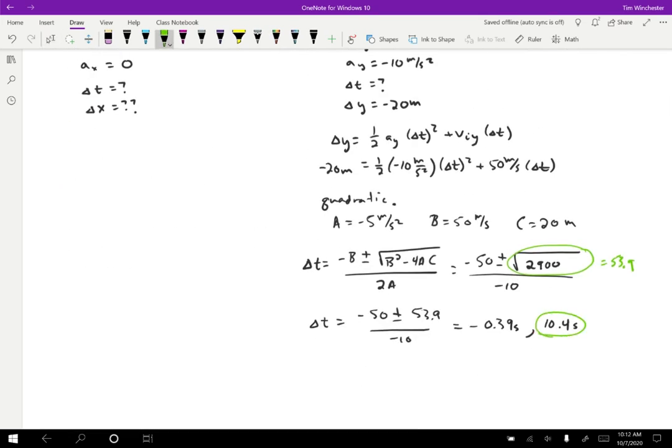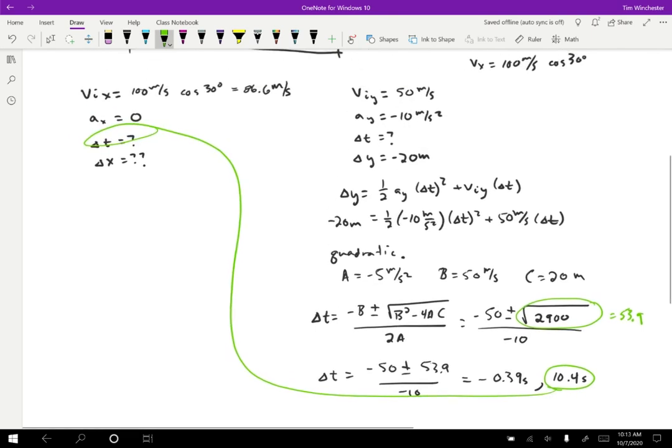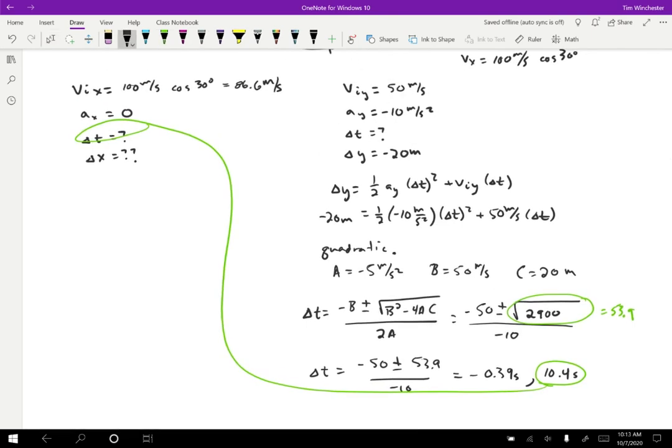So once we decide that that is the solution that makes sense in this case, we want to plug that in for our delta T. And we now know the initial velocity and the delta T so you can figure out delta X. So delta X equals one half AX delta T squared plus the initial velocity in the X direction times delta T. The acceleration in the X direction is zero. So this term is zero. Which then leaves us with the initial velocity, 86.6 meters per second times delta T, which is 10.4 seconds. And if I plug that into a calculator, 86.6 times 10.4, then I'm going to get 900 meters.